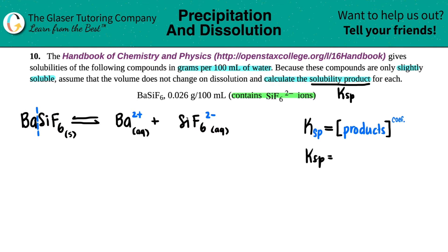Ksp is going to be equal to the two products. So the concentration of the barium 2+ times the concentration of the SiF6 2-. And we have to raise them to the coefficients, but for both of them it's just one-to-one. Both of them would be raised to the first. So now the question is, what is the concentration of barium? What is the concentration of SiF6?